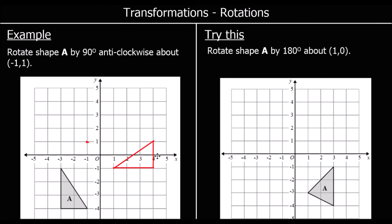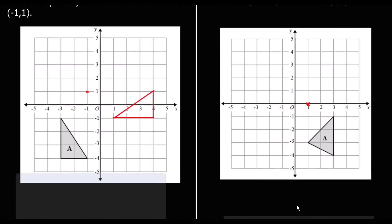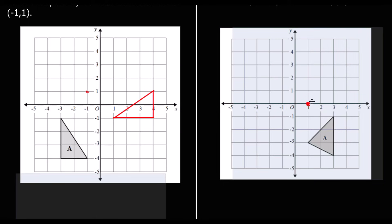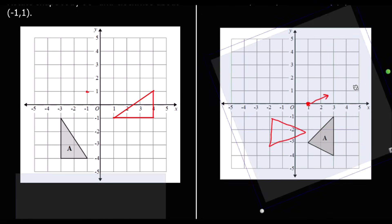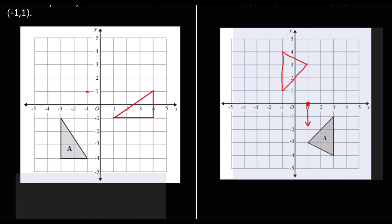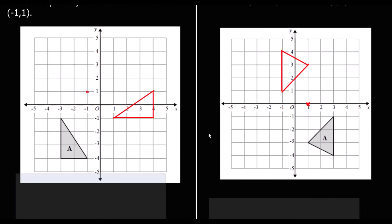And one more: 180 degrees about (1, 0). So (1, 0) is here. Rotating 180 degrees — I'm going to use tracing paper, hold it at (1, 0), and rotate 180 degrees. The line is going up; it's going to end up going down. I'm going to rotate it 180 degrees. There is my new shape. I'll draw the shape where the tracing paper has taken it to, take the tracing paper away, and there is the new shape.